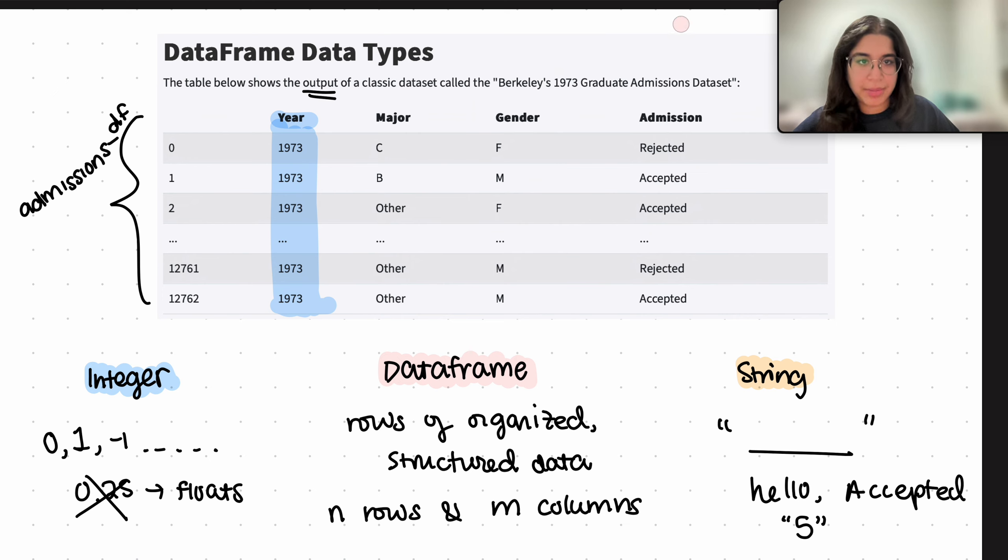And a data frame, as we mentioned before, this admissions DF, this entire output is an output of the admissions data frame. So this is an example of a data frame. We can't say that a single column is an example of a data frame. It's a column that's within the data frame, but the column itself is not a data frame. That's just a column included in the entire big data frame.